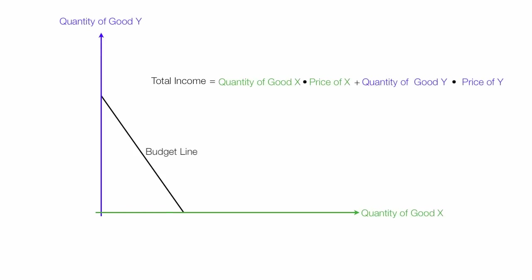This makes the assumption that the consumer spends all their income on good X and good Y. Often income is labeled as M, so I have M equals the quantity of X times the price of X, plus the quantity of Y times the price of Y.